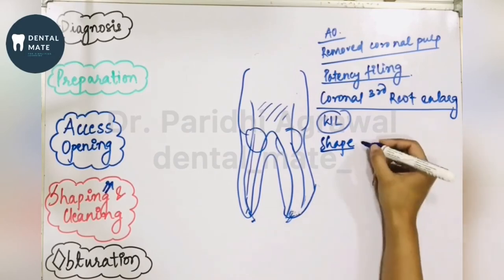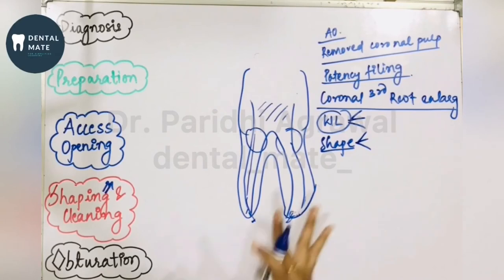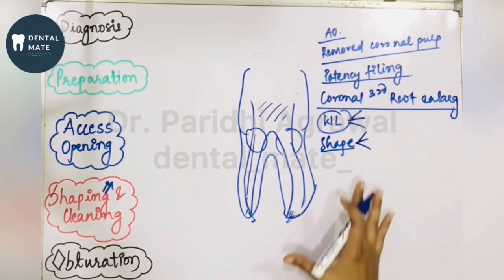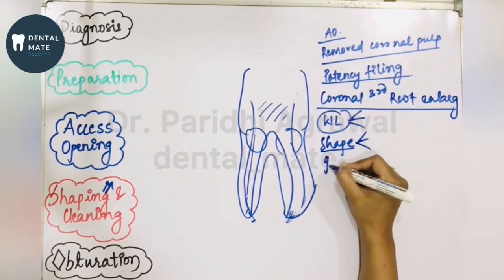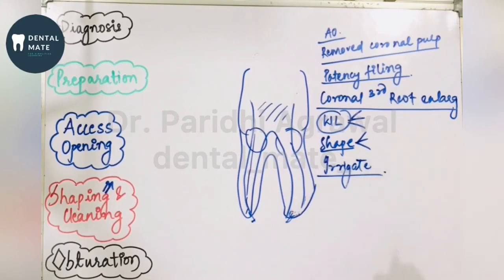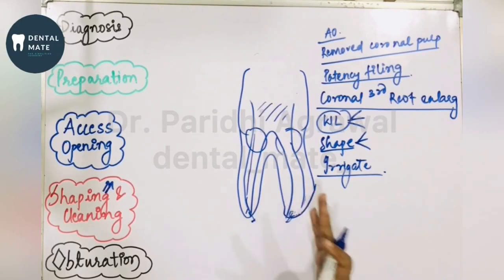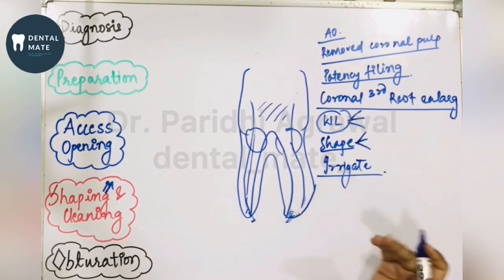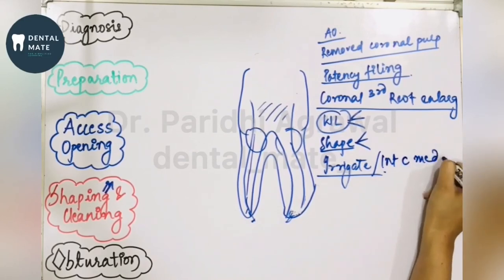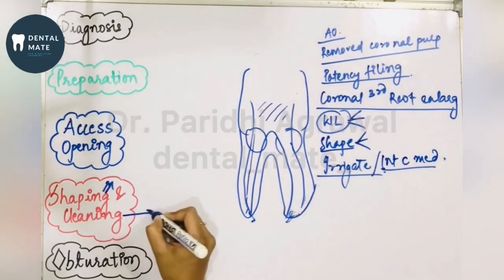There are various techniques for shaping, which we will be discussing in detail. This is the basic overview of root canal preparation. After shaping is done, you irrigate the canal, and if there is an excessive weeping canal, you would place an intracanal medicament.